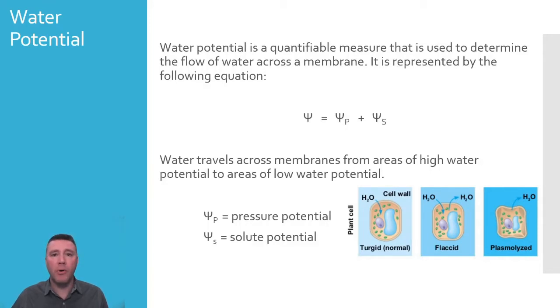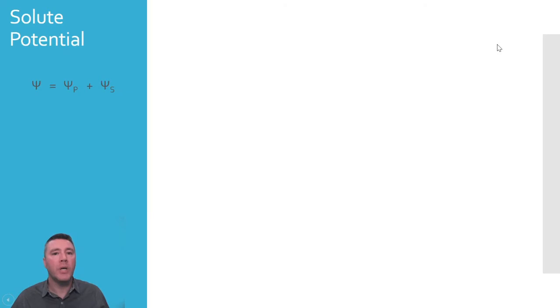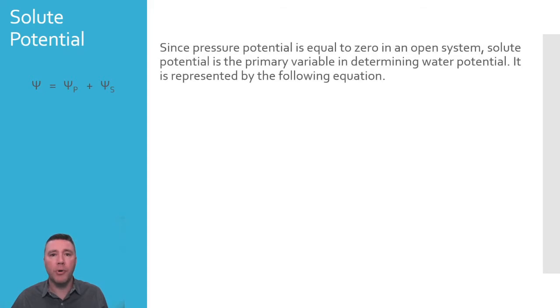Solute potential is the component of water potential that results due to the influence of all those dissolved solutes within the solution. In a system that is open to the environment, such as one without a rigid cell wall, pressure potential is equal to zero, leaving solute potential as the primary variable useful in determining water potential. Setting pressure potential equal to zero effectively makes water potential equal to solute potential.